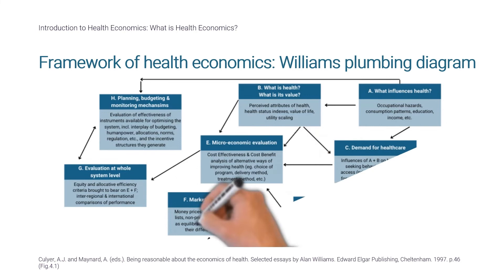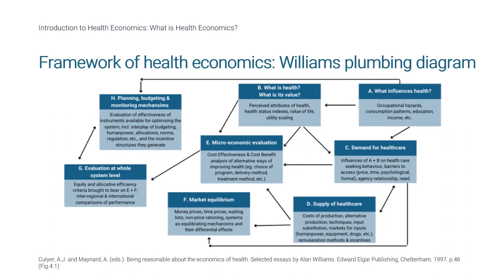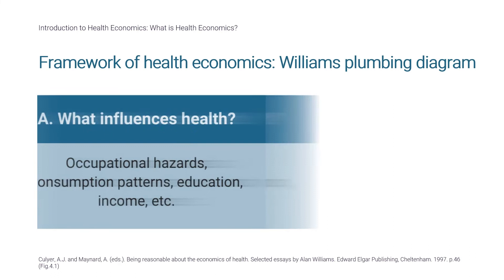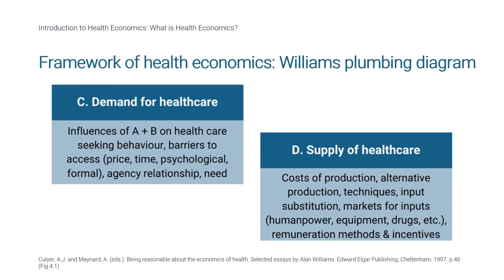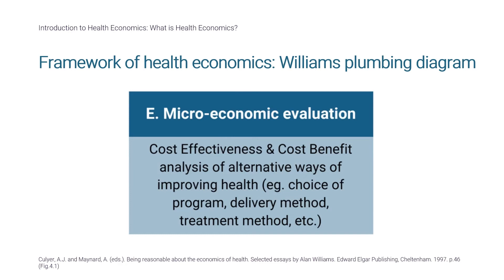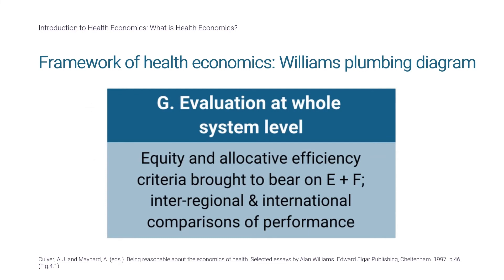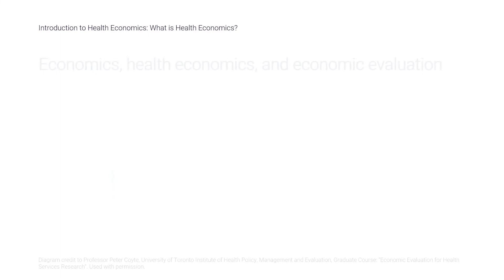Health economics includes many fields of study. The Williams Plumbing Diagram — named for its resemblance to a network of pipes — summarizes eight fields under the umbrella of health economics. These include: what influences health (e.g., occupational hazards, education, income); how we define health and its value; demand and supply of healthcare; microeconomic evaluation, which is the main focus of this module; market equilibrium (e.g., prices and waitlists); planning, budgeting, and monitoring including incentive structures and human resources; and evaluation at a system level, including equity and international comparisons.